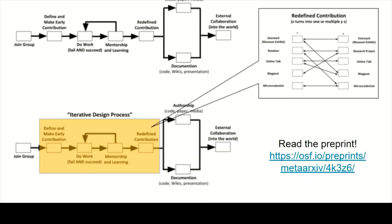We view this as an iterative design process. Their contributions are iterative and they refine them, which helps them learn how to work on projects, make things sustainable, and really refine their contribution without leaving early and giving up. Our philosophy here is that a contribution in one column can be turned into one or multiple others — an online talk can become a better version of that talk or a blog post; a blog post can become a research project. There are many possibilities for them to engage and refine. I've written a preprint on this philosophy and how the Orthogonal Research Lab works.